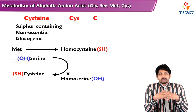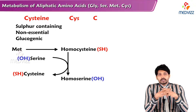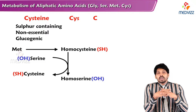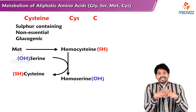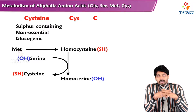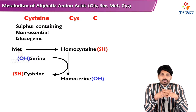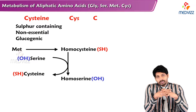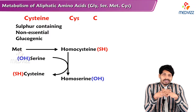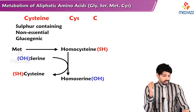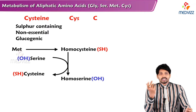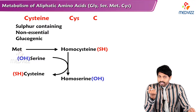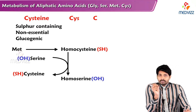Hello everyone, myself Dr. Suresh, professor of biochemistry. In this video we'll talk about the non-essential sulfur containing amino acid, that is cysteine. In our previous videos we have already discussed the essential sulfur containing amino acid methionine and its related disorders. Cysteine is a non-essential sulfur containing amino acid and, like methionine, it is also glucogenic.